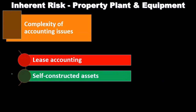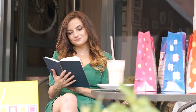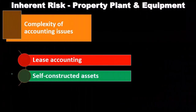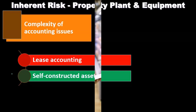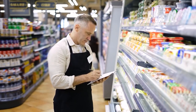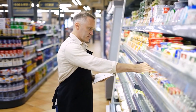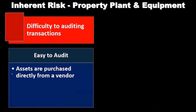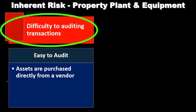A capital lease involves recording what appears to be a lease as a purchase on the books because in substance it is one, which can present more difficult accounting issues. If the company constructed the capital asset themselves and then used it — not as inventory but as property, plant, and equipment — valuing that asset can also be more confusing.